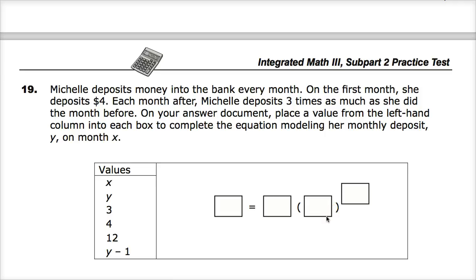The question says, Michelle deposits money into the bank every month. On the first month, she deposits $4. Each month after, Michelle deposits three times as much as she did the month before, and the three times thing matters here a lot.